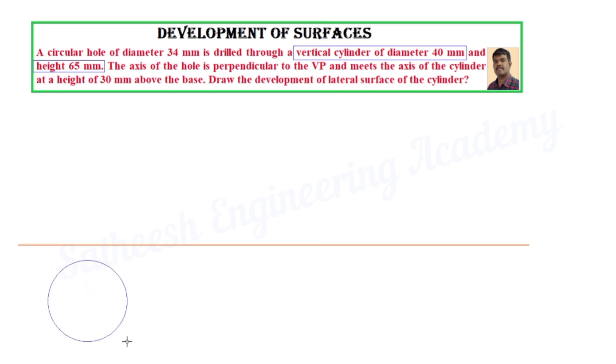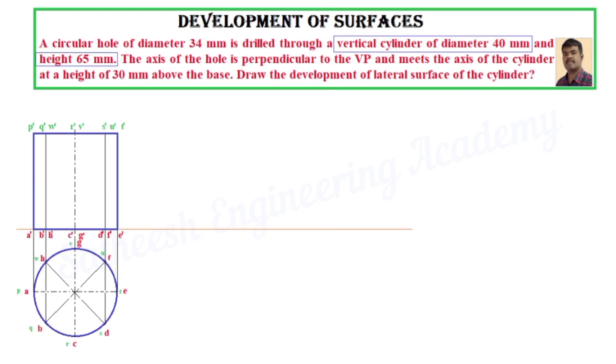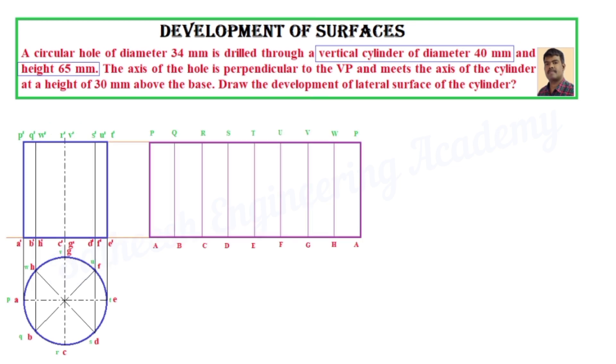First we draw the vertical cylinder of diameter 40 mm and height 65 mm. The cylinder is resting on HP, so in top view the circular shape is visible, divided into n equal parts. In front view it's a rectangle. Assign letters and numbers at the base and top surface - in front view with dash, and top view without dashes.